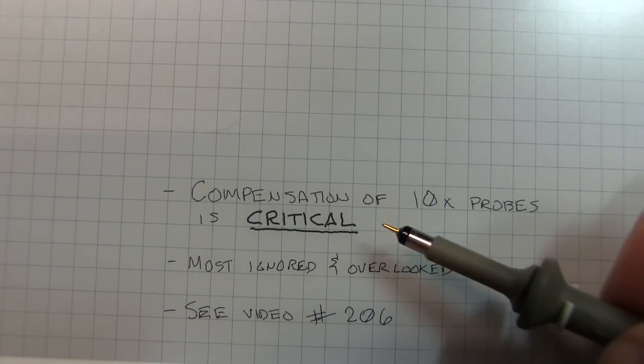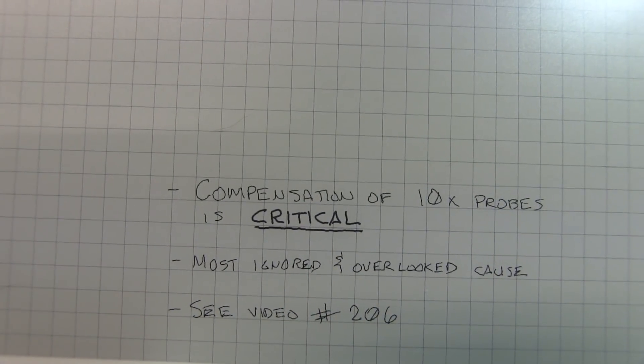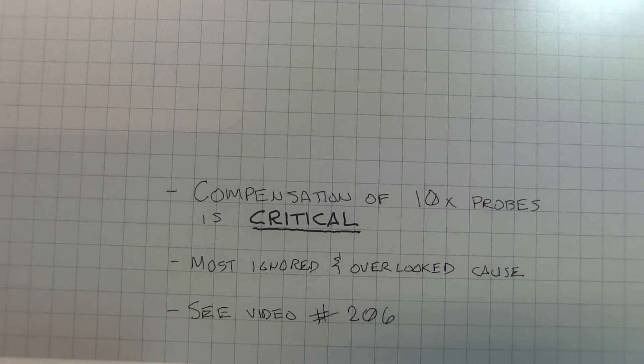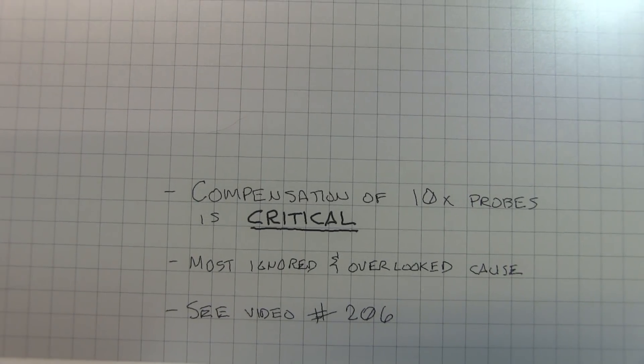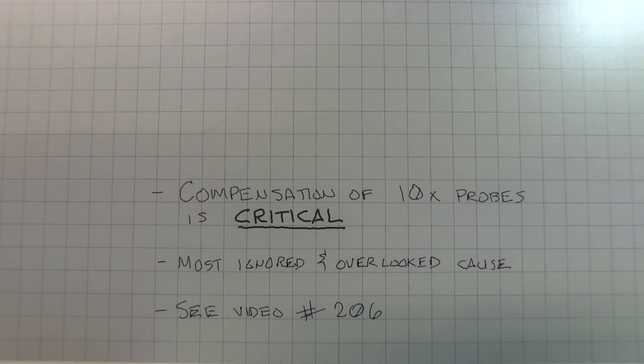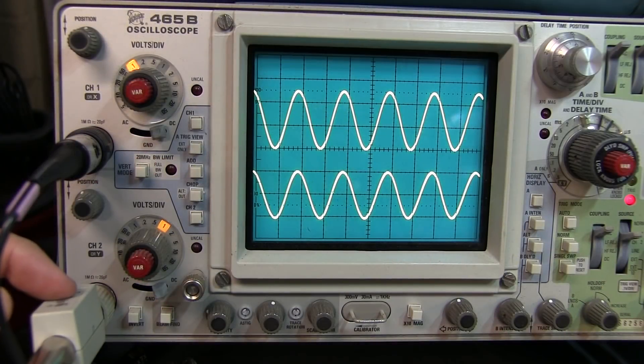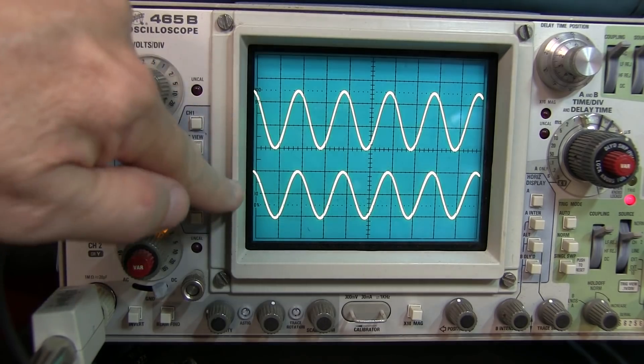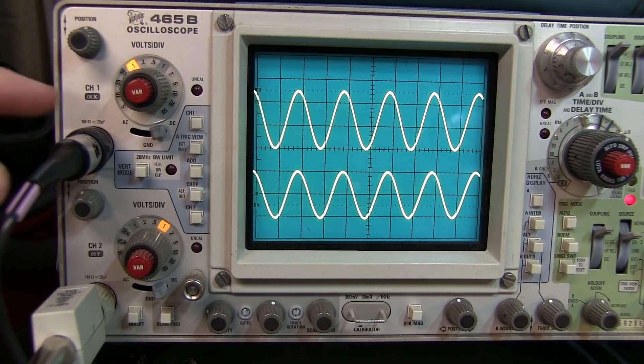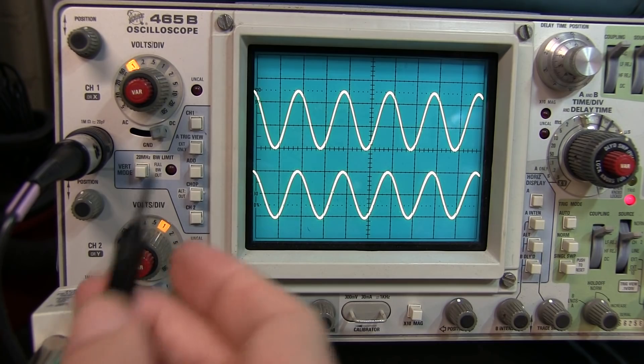Compensation of 10x probes is critical. And it's really probably the most ignored and most overlooked cause of amplitude errors when making measurements with a scope. My video number 206 goes into some detail to talk about how important that is. But let's take a look at it here quickly. Now the probe on channel 2 is properly compensated. I'm getting the right voltage reading here. But probe number 1 is not properly compensated.